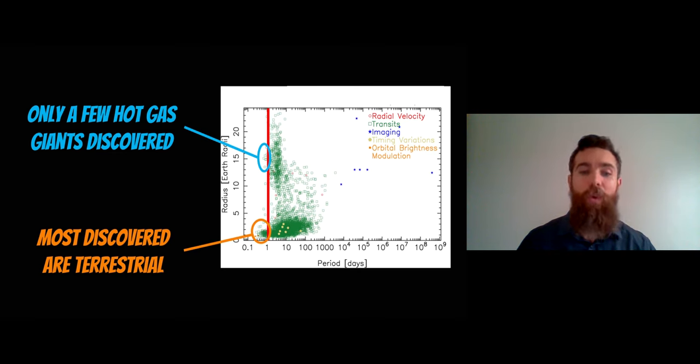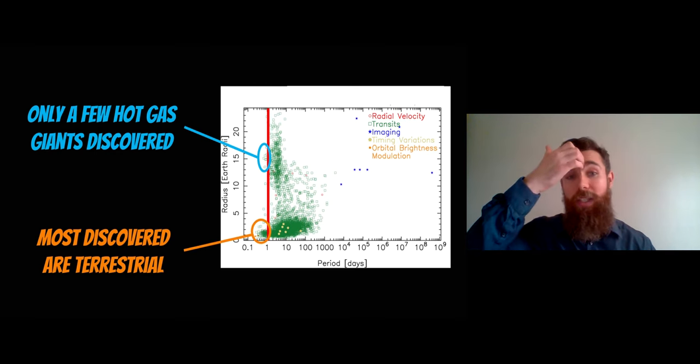And then you have a group down at the bottom which are more terrestrial type. So these are kind of Earth size, Earth sort of compositions or terrestrial in their composition and most of them that have been discovered are that sort of size composition and only a handful really are these gas giants.